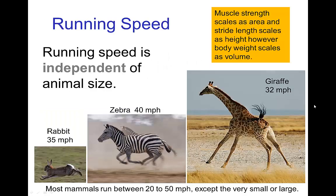Now, a related scaling effect is that the running speed of mammals is roughly independent of their size. So we go from something as small as a rabbit to something as large as a giraffe or even a hippopotamus, and those running speeds are all in the range of around 30 to 45 miles an hour.